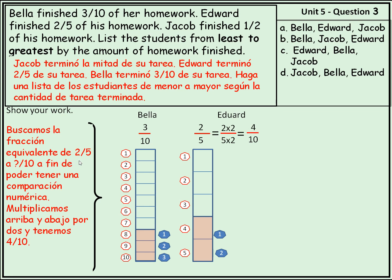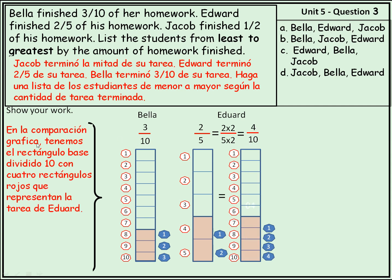Buscamos la fracción equivalente de dos quintos — ¿cuánto es entre diez? A fin de poder tener una comparación numérica, multiplicamos arriba y abajo por dos, y tenemos cuatro décimos. En la comparación gráfica tenemos el rectángulo base dividido en diez, con cuatro rectángulos rojos que representan la tarea de Edward. Aquí tenemos el segundo rectángulo de la tarea dividida en diez cuadritos, marcados uno, dos, tres, cuatro en rojo. Ahora tenemos cuatro décimos y tres décimos, que es más fácil de comparar.